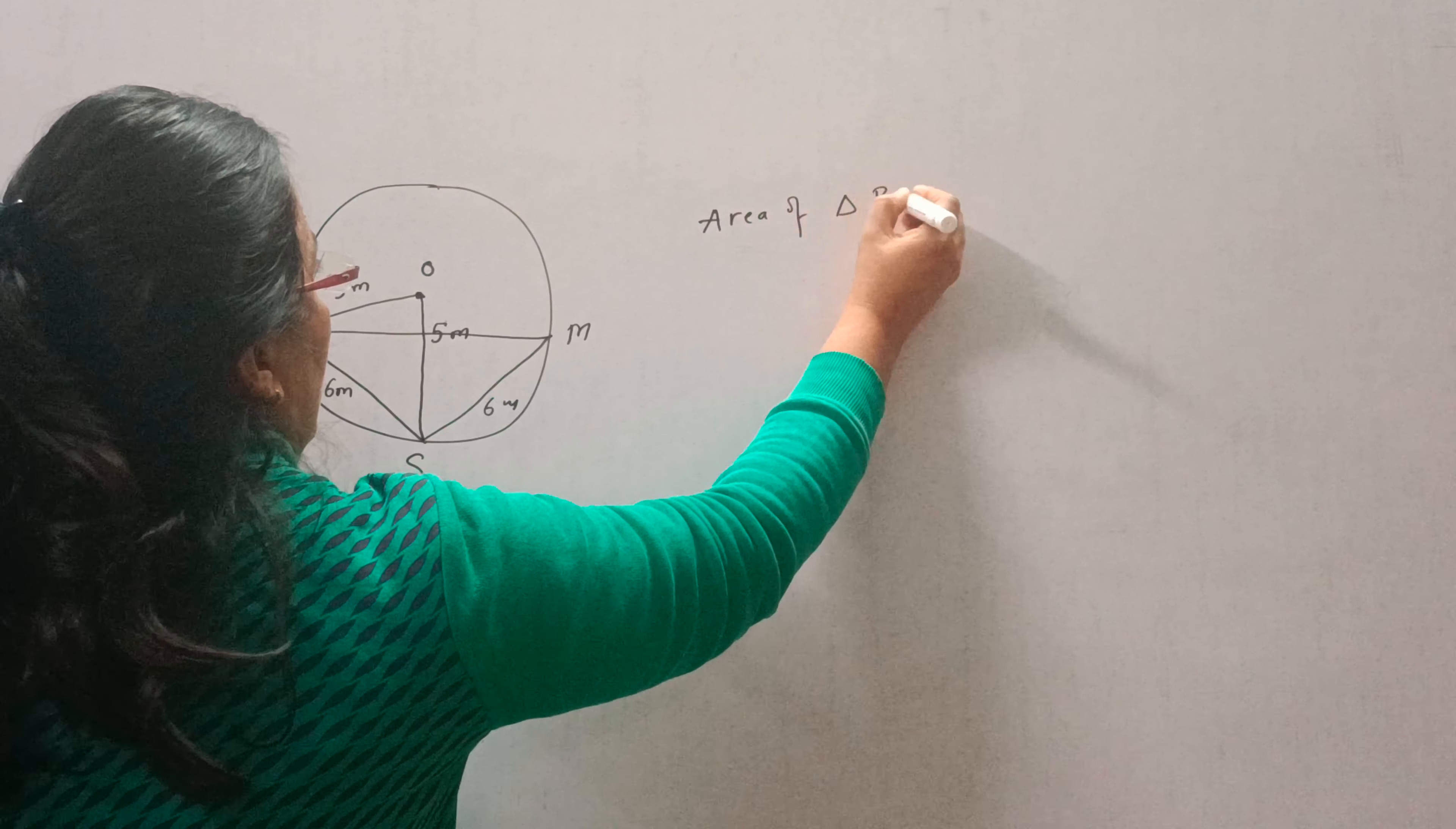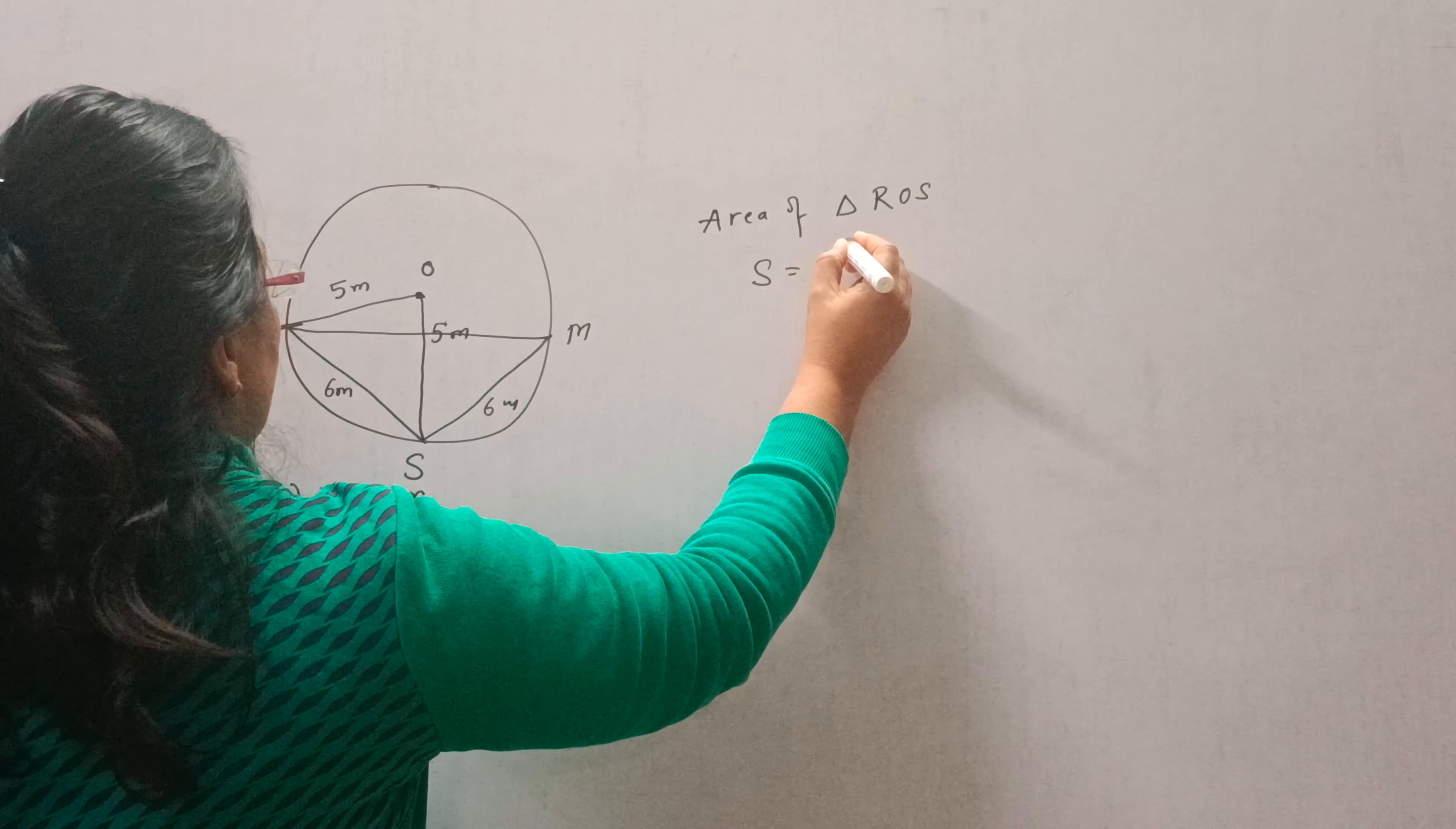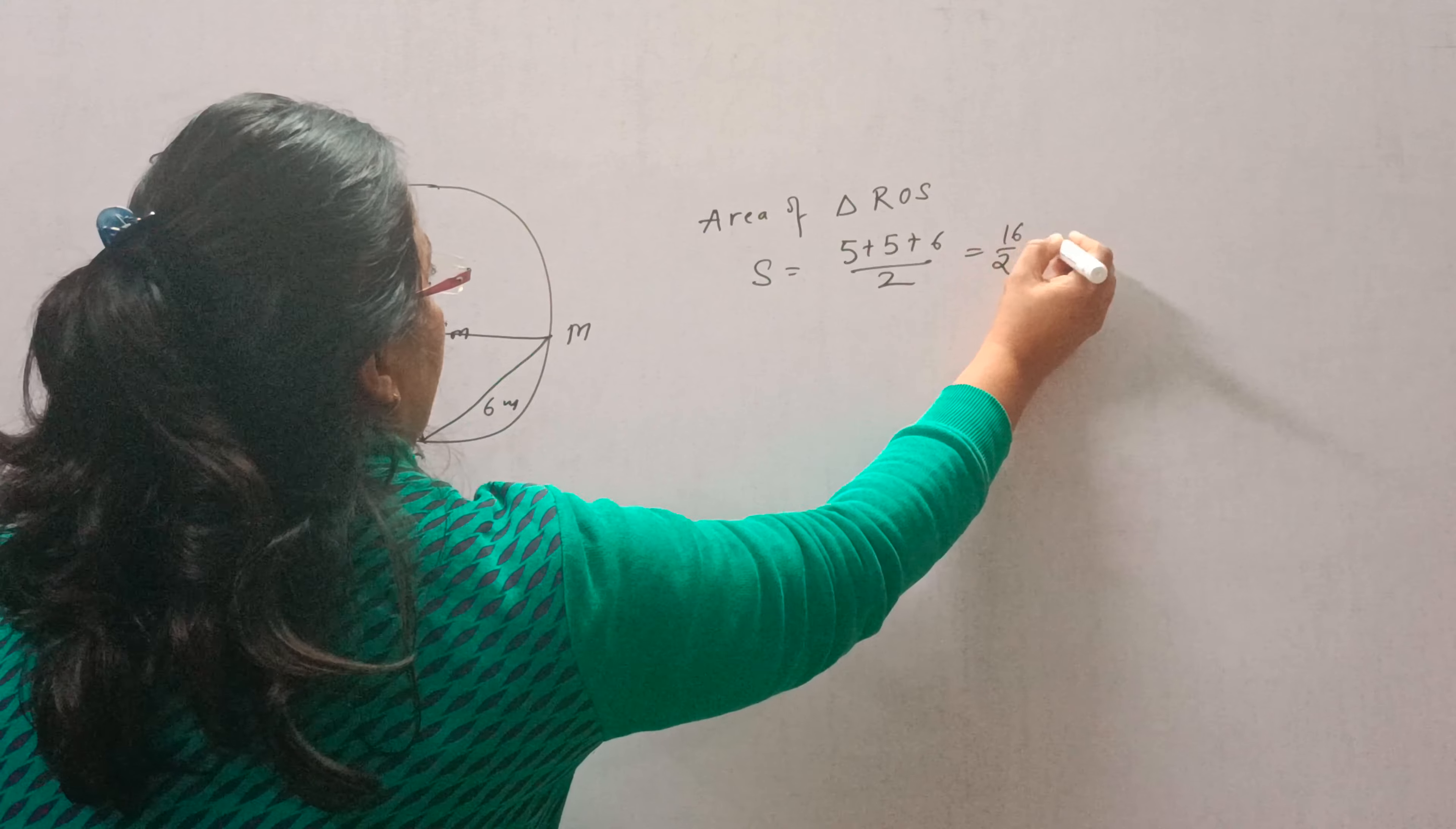Area of triangle ROS. First, we will find S, that is A plus B plus C divided by 2. 16 by 2, that is 8.